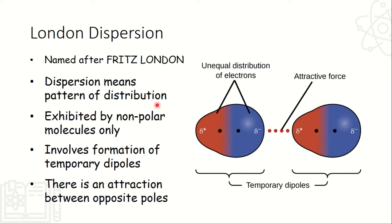So we have the London dispersion. Pinangalanan siyang London dispersion in honor of Fritz London, siya yung nag-conceptualize nung idea of the London dispersion forces of attraction. So pag sinabi namang dispersion, it means it is the pattern of distribution. Under the London dispersion, may nababago sa pattern ng distribution nung ating electrons involved in the formation of molecule. Ang London dispersion ay nagaganap lang sa mga non-polar molecules.